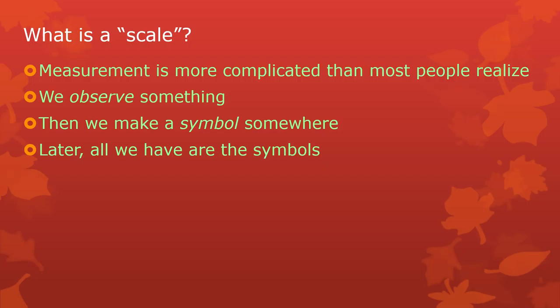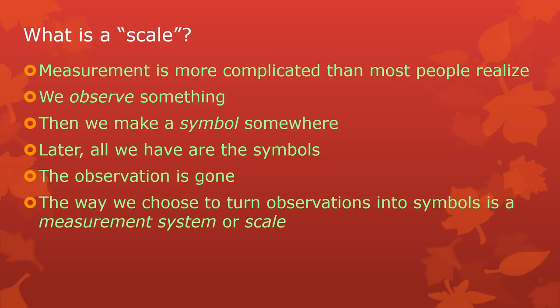The symbols we usually use are numbers, but there are lots of other kinds of symbols — words, little smiley faces and frowny faces, colors, whatever. Later, after the observation is done, all we have left are the symbols themselves, and we need to reconstruct the crime as it were — find out how those symbols came to us, where they came from, what they mean. The observation is gone. Then we need to know how those observations were turned into symbols.